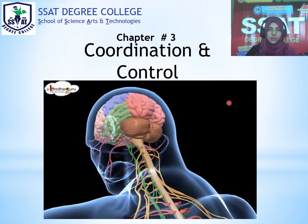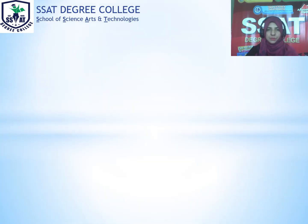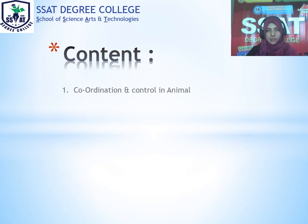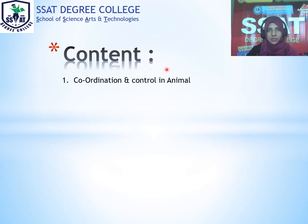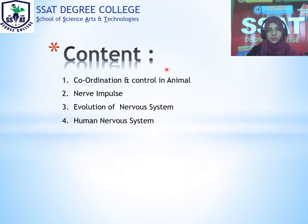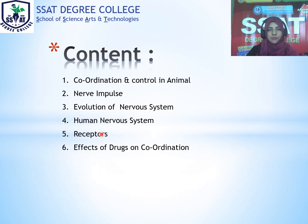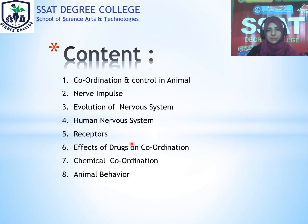Today we are going to start our new chapter, that is chapter number 3: coordination and control. The content included in this chapter are coordination and control in animals, nerve impulse, evolution of nervous system, human nervous system, receptors, effects of drugs on coordination, chemical coordination, and animal behavior.